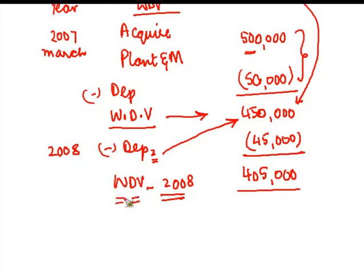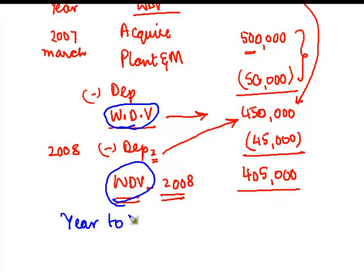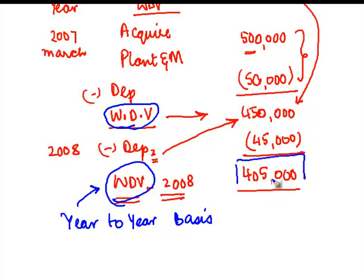The significance of written down value is that for income tax purposes, depreciation is charged on the written down value. When calculating depreciation on a year-to-year basis — except for power companies, which we will see subsequently — the depreciation has to be charged successively on the written down value.